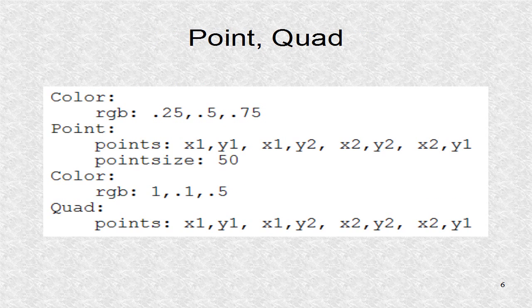The color is set for the point instruction. We give them four x, y coordinates, corresponding to the four corners of the square. To make them easy to see, we set a large point size. Then, a color is set for the quad, which is given the same four set of coordinates.